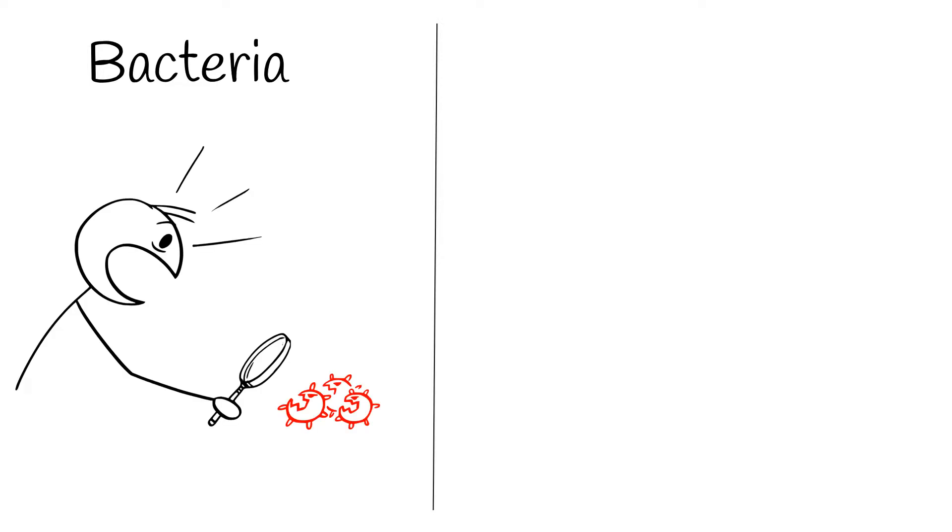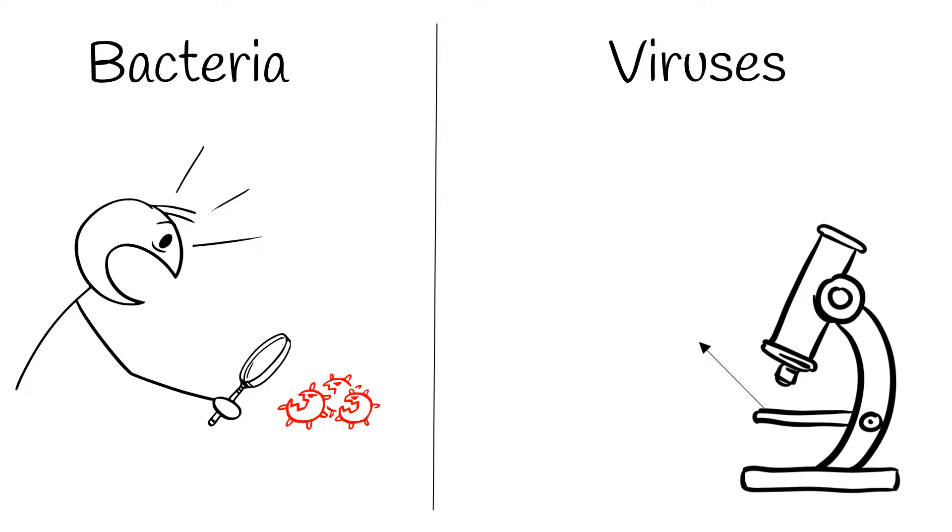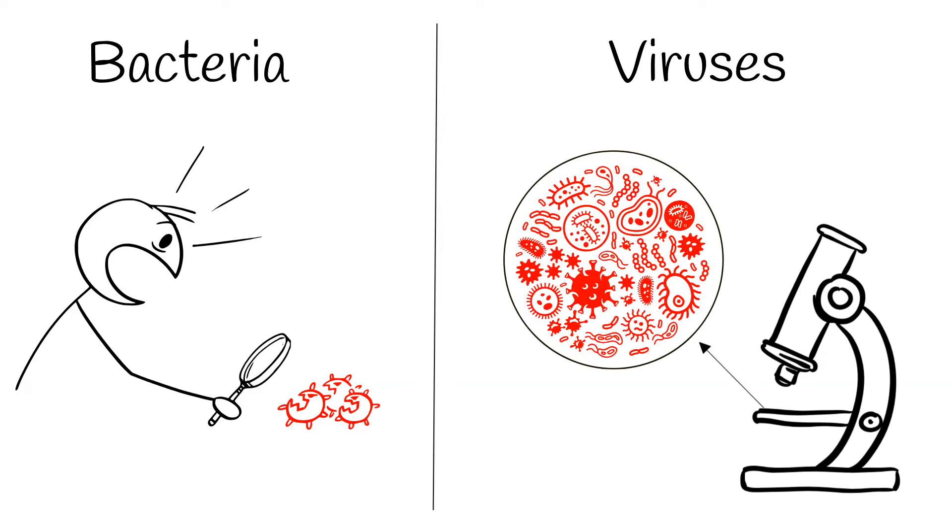There are two types of illnesses that we can vaccinate against. Ones caused by bacteria, or tiny living microorganisms that are too small to see. Or viruses, even smaller germs that are not living and cannot survive without a host, or someone to infect.